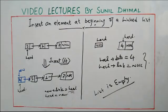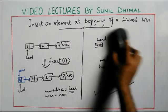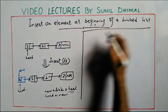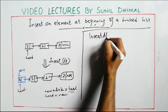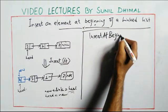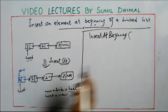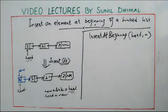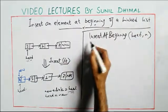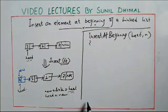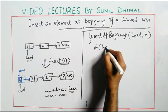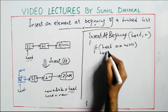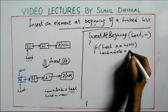Now let's write the algorithm. The function is called insert_at_beginning. It takes the head pointer and the element to be inserted, let's call it n. First, handle the corner case: if head equals null, the list is empty.